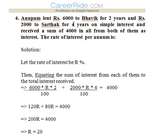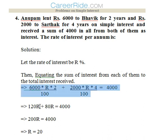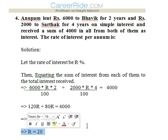Anupam lent rupees 6000 to Bhavik for 2 years and rupees 2000 to Sarthak for 4 years on simple interest, and received a total of 4000 as interest from both. We have to find the rate of interest per annum. Assuming rate = r percent: (6000 × r × 2 / 100) + (2000 × r × 4 / 100) = 4000. Solving this gives r = 20. So the rate of interest is 20 percent.